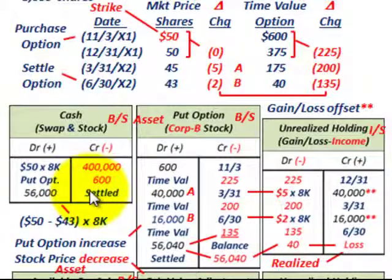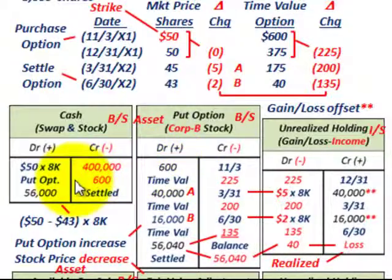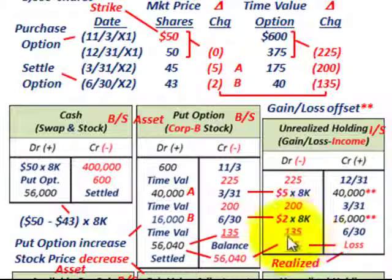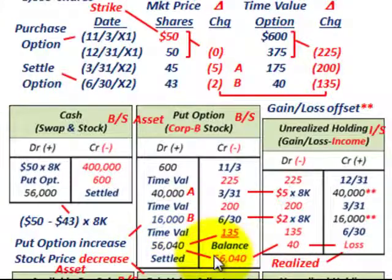It was a pretty good deal overall — we only paid $600 for the option and received $56,000 upon exercising it. The $40 realized loss is only a balancing entry to cover the difference between what was in our put option account at settlement and what we received in cash.